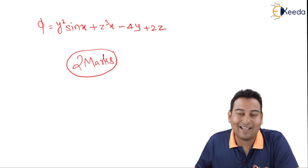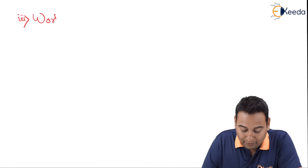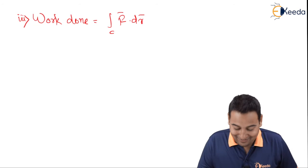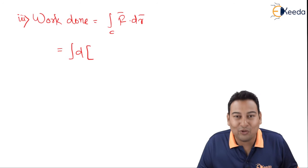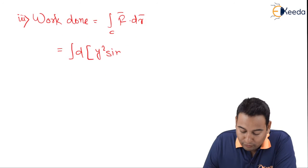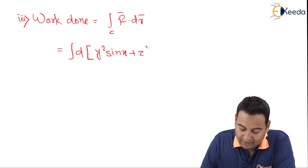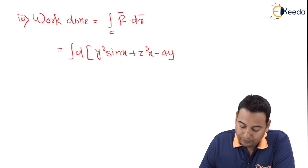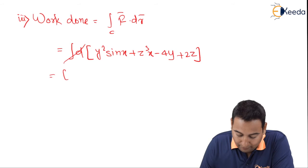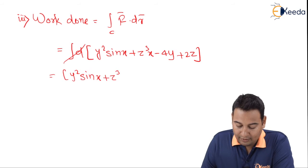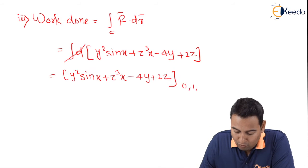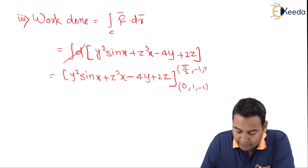For the last part, work done. The formula is the integral of F bar dot dr bar. Since the field is conservative, this equals [φ] evaluated between the given limits. We write the scalar potential φ = y² sin x + xz³ − 4y + 2z and apply it from lower limit (0, 1, −1) to upper limit (π/2, −1, 2).